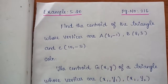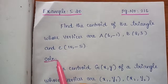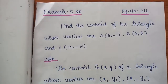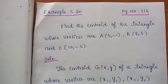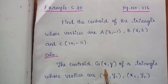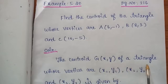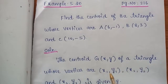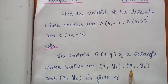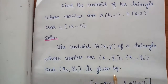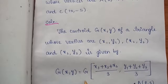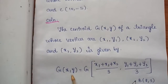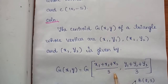We have to find the centroid of the triangle whose vertices are given: A(6,-1), B(8,3) and C(10,-5). Solution: The centroid G(X,Y) of a triangle with vertices (X1,Y1), (X2,Y2) and (X3,Y3) is given by G = ( (X1+X2+X3)/3 , (Y1+Y2+Y3)/3 ).